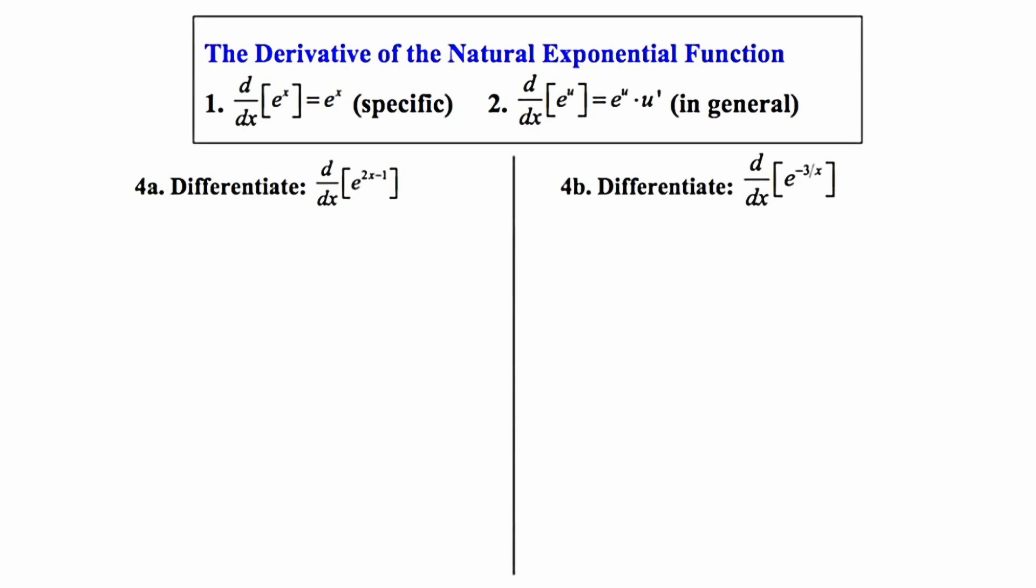But what if the exponent is something more complicated than x? We can generalize this exponent by calling it u. If you take the derivative of e to the u, you end up repeating e to the u, but then you also have to multiply by the derivative of whatever that exponent happened to be. Let's take a look at a specific example.